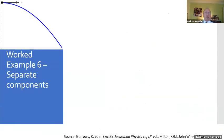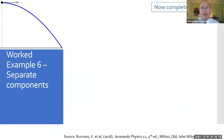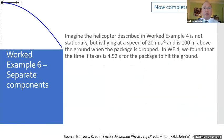Here's worked example six. So we're using the same diagram, and that's up on the top left. Imagine the helicopter that was described in worked example four is not stationary. Remember the one that dropped from 100 meters, the package? But this time it's flying at a speed of 20 meters per second, and is 100 meters above the ground when the package is dropped. In worked example four, we found that the time it takes is 4.52 seconds for the package to hit the ground.